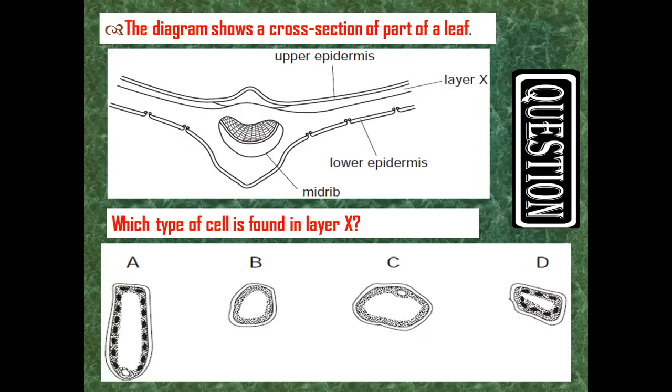We have the plant diagram of the bifacial leaf. In this plant diagram, we have upper epidermis, we have xylem, this is palisade mesophyll. Below that, we have spongy mesophyll. And below, we have lower epidermis. So which type of cell is found in layer X? This layer X contains columnar-like cells. This column-like cell, A is our column-like cell.